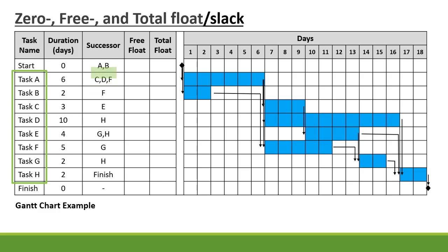The successor activities of the start milestone are Task A and Task B. Task A is connected to C, D, and F in a finish-to-start relationship. Task B is connected to F. Task C is connected to E. Task D is connected to H. Task E is connected to G and H. Task F is connected to G. Task G is connected to H. And Task H is connected to the finish milestone.